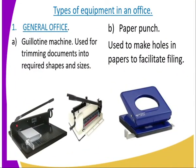Now let us look at the different types of equipment found in an office. We refer to them as general office equipment. We start with the gyrotech machine. This one is used for trimming documents into required shapes and sizes — it is for cutting papers. We use it to cut documents and papers.